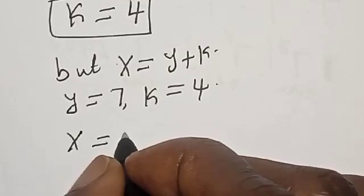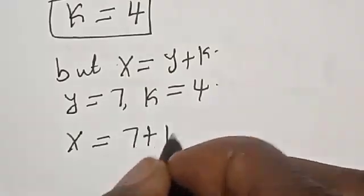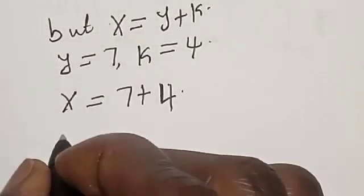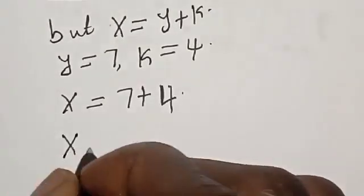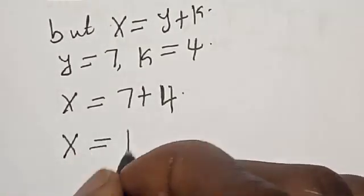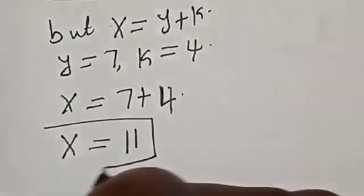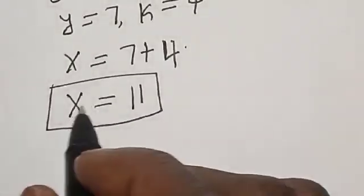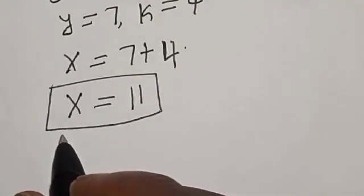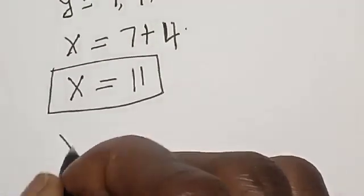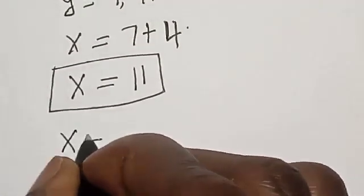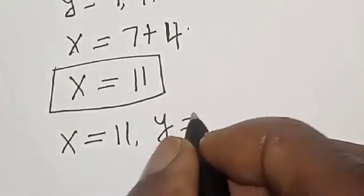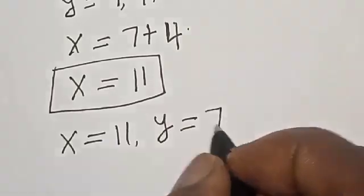So, s is equal to 7 plus 4. Therefore s is equal to 11 — that is our final answer. Our final answers are: s is equal to 11, and y is equal to 7.